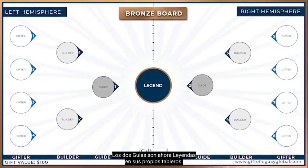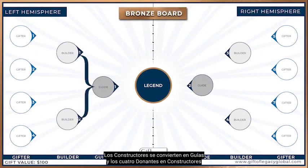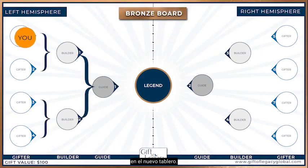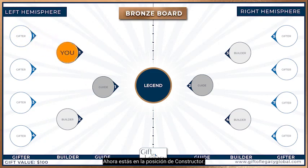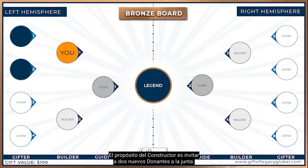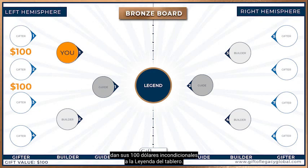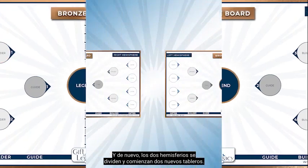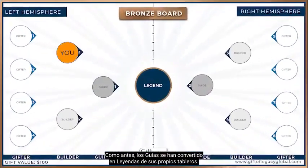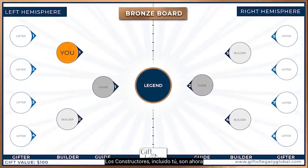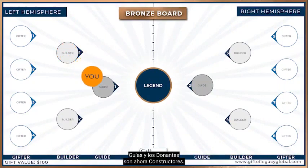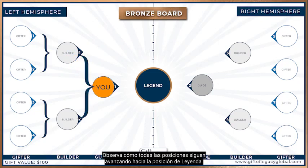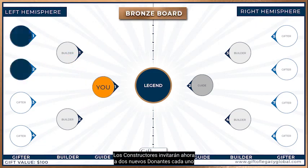The two guides are now legends on their own boards, the builders become guides, and the four gifters become builders on the new board. You are now in the builder position. The purpose of the builder is to invite two new gifters to the board. When all four builders have invited the eight new gifters, they give their unconditional $100 to the legend of the board, and again the two hemispheres split and start two new boards. Like before, the guides have now become legends of their own boards, the builders — including you — are now guides, and the gifters are now builders.